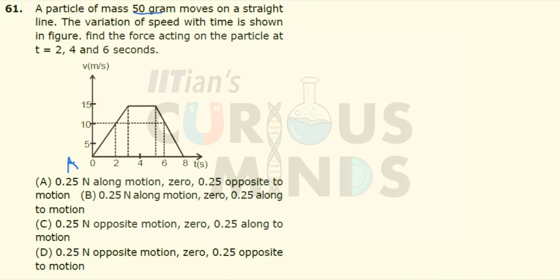A particle of mass 50 gram moves on a straight line and the velocity-time graph is given. We have to calculate the force acting on the particle at 2, 4, and 6 seconds. Let me name these points as A, B, C, and D.